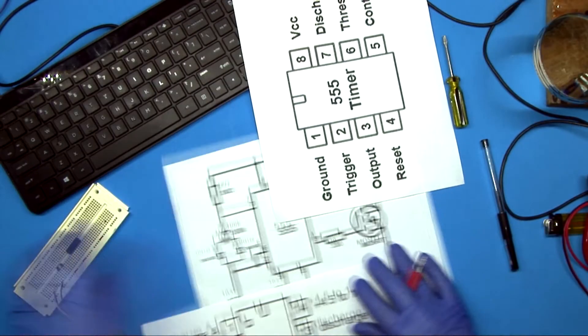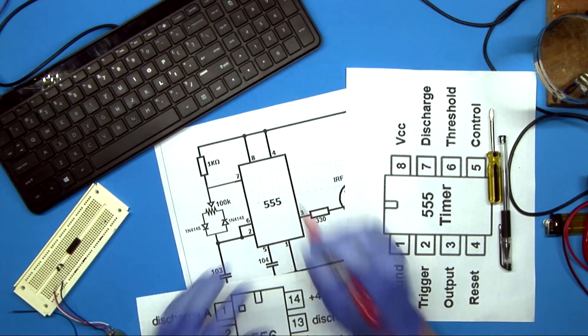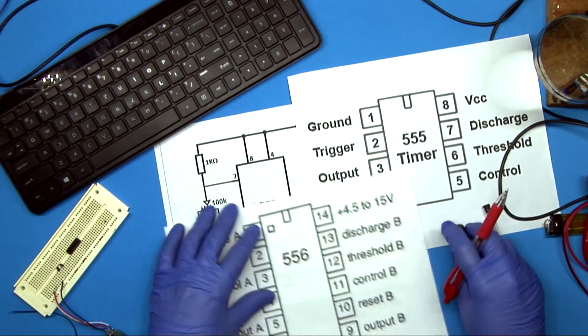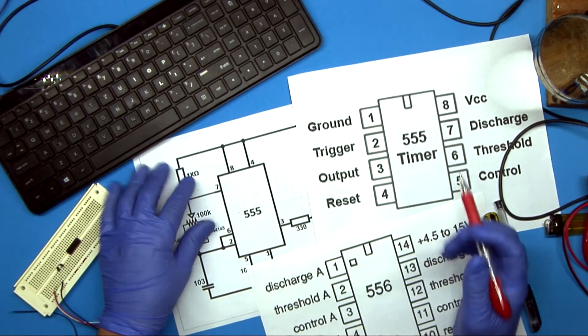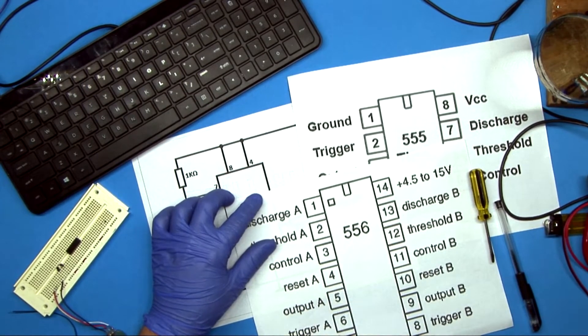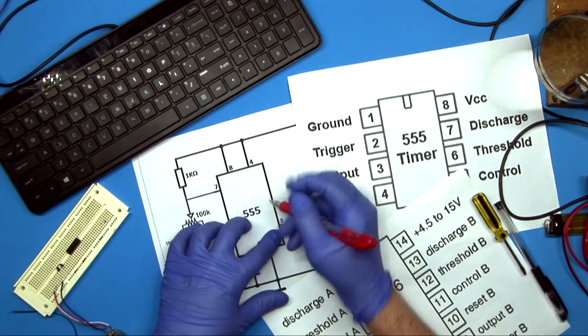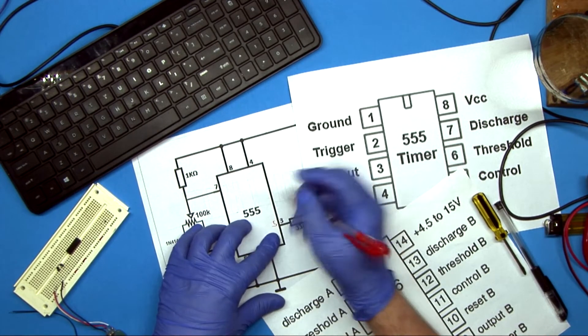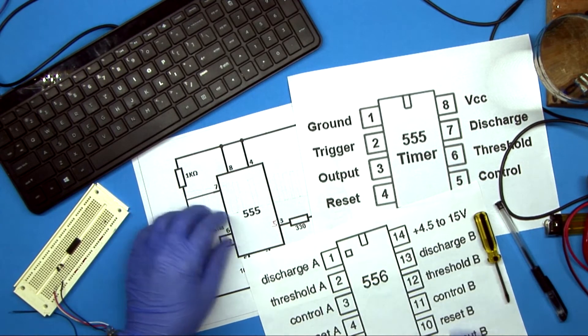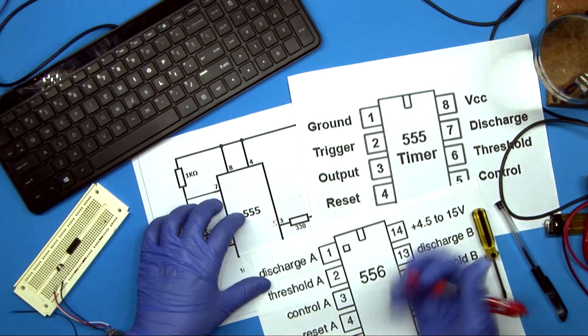Now, what I'm going to do before we get too far, since these pin numbers are going to be different because we're using a different chip, I'm just going to go through and update them on here. So pin 3 is the out, and on here, the output is 5. So we'll make that 5. It's terrible handwriting. And pin 4 is the reset, and it's also 4.